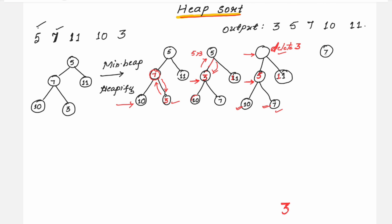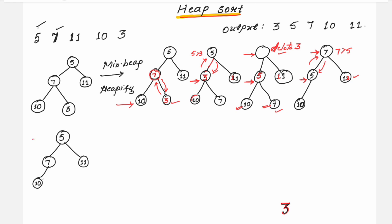You delete 3 and bring 7 to the place of 3. The binary tree now has 4 elements, with one element stored in the sorted list. Check: 5 is less than 11 — no problem. Then check the next level: 7 is greater than 5. The parent node 7 is greater than child node 5, so you have to swap. After swapping, the root element is 5, so delete that and place it in the sorted list.